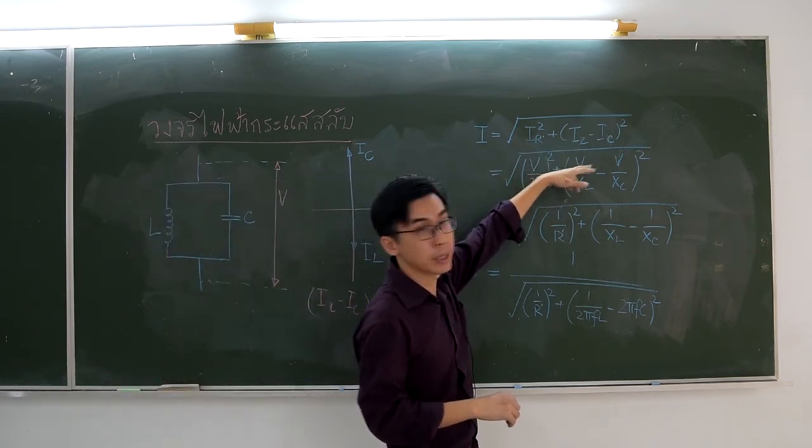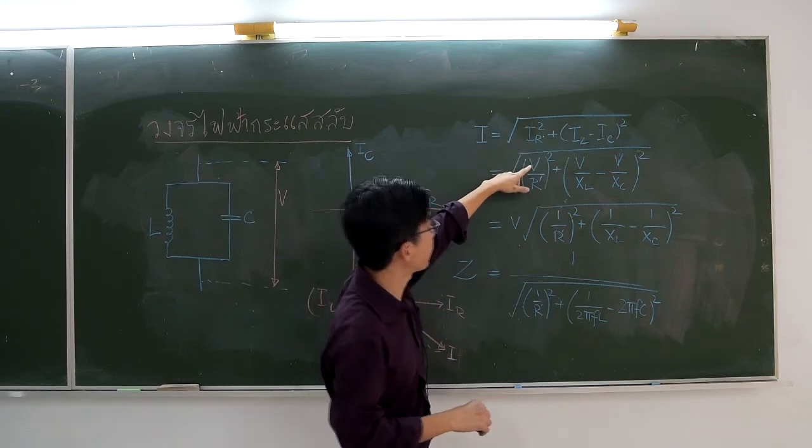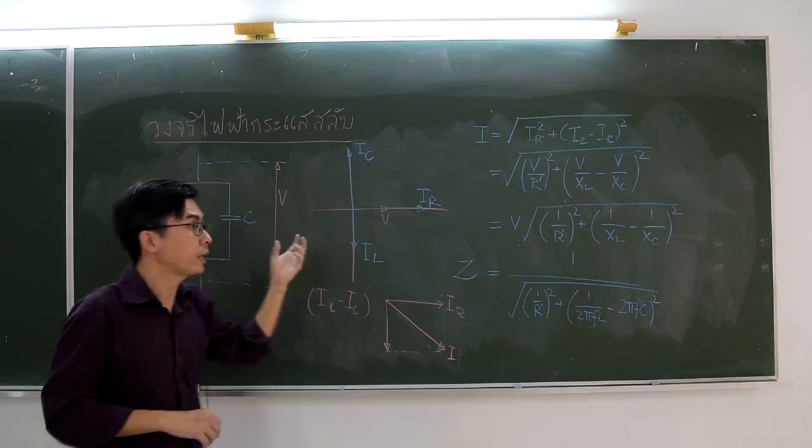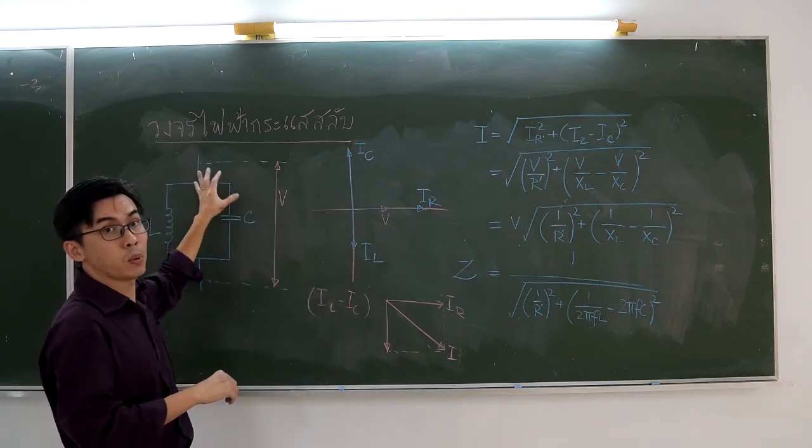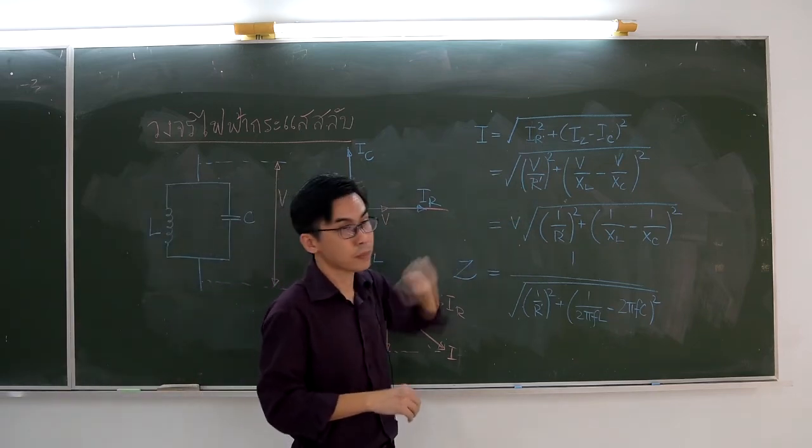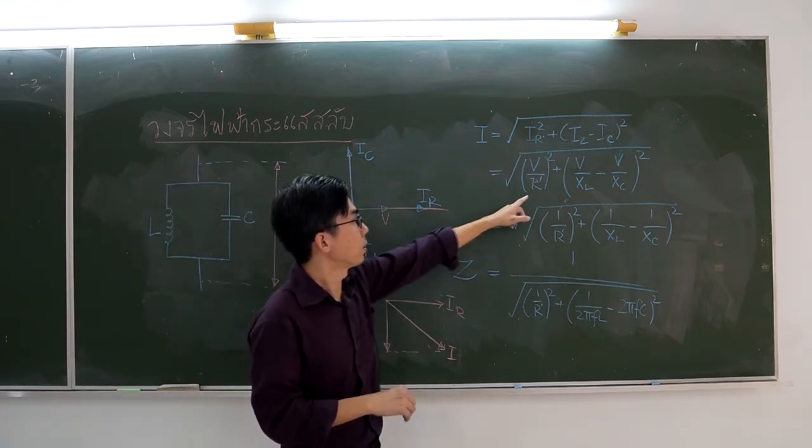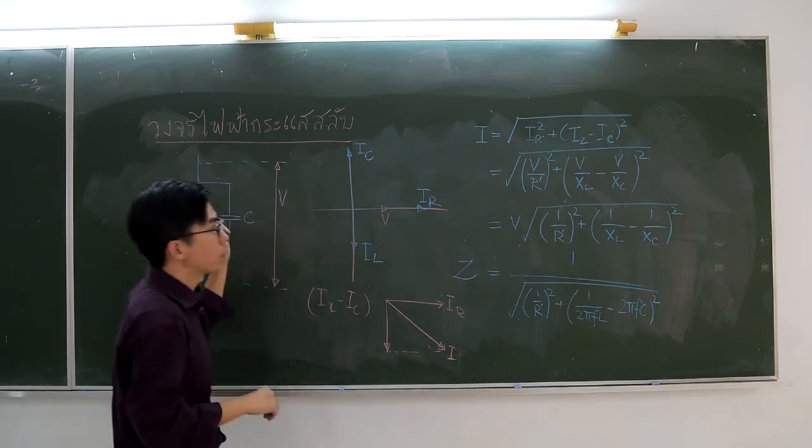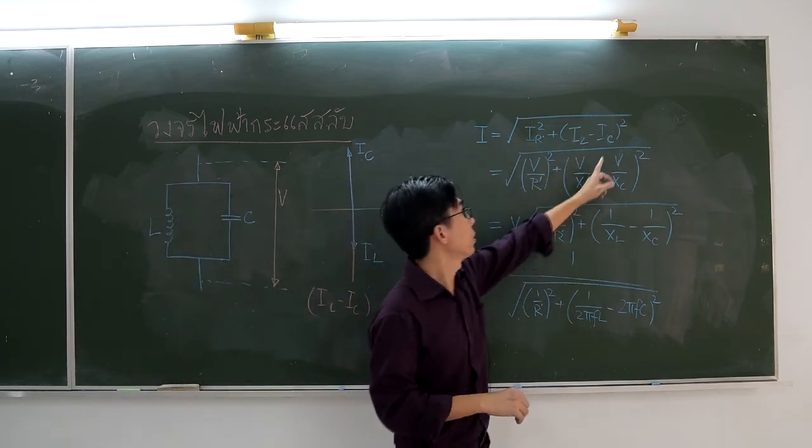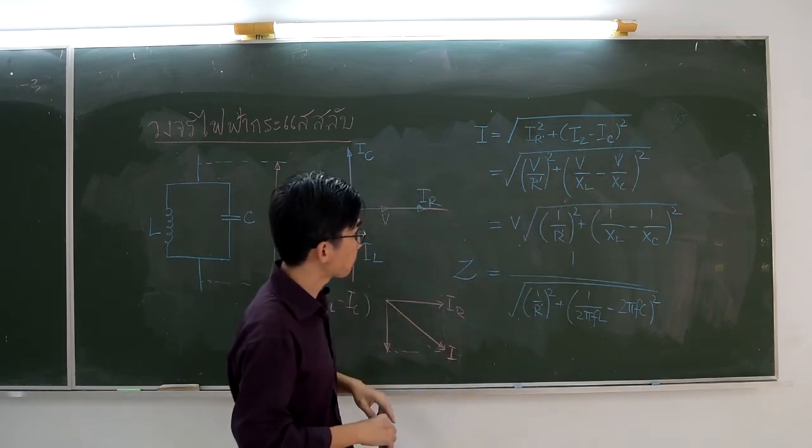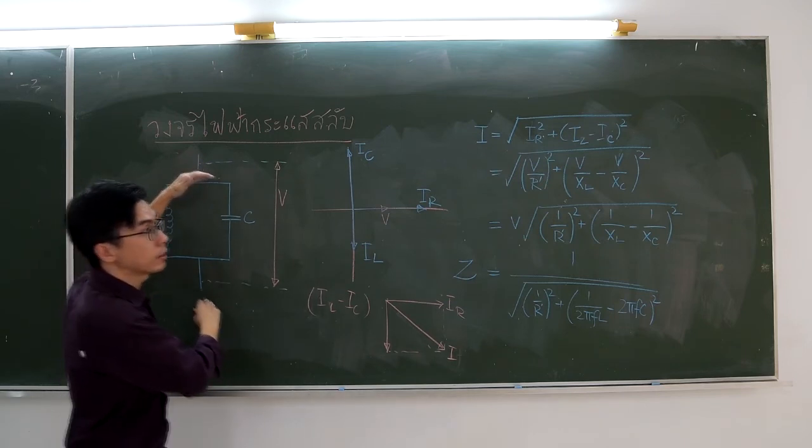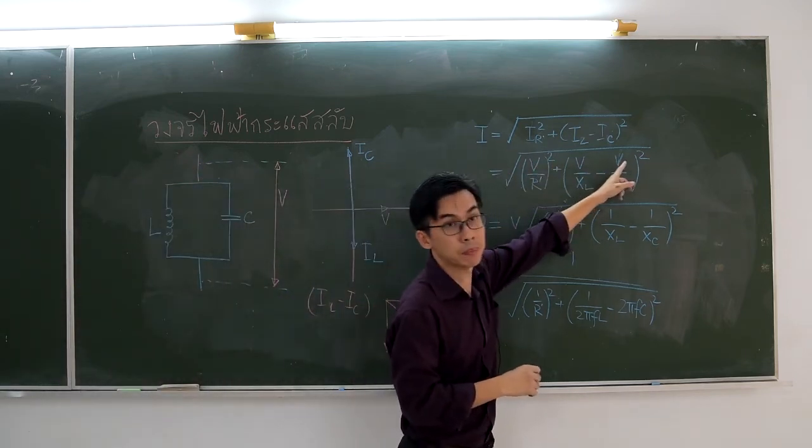Now, we can replace IR by V over R prime, IL by V over XL, and IC by V over XC. Here, the voltage across each element is the same. We can pull it out of the square root sign.